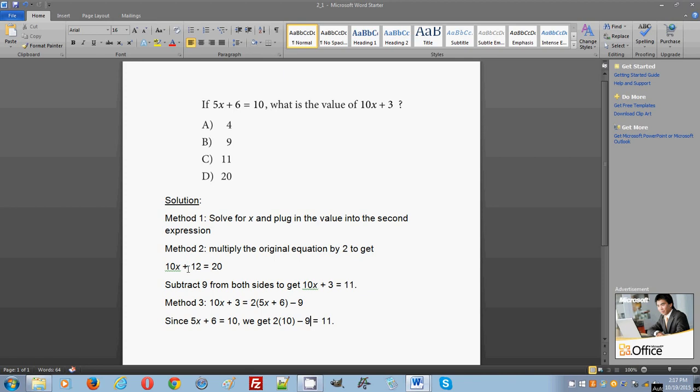So you might as well use my method because it's really easy to see. 10x plus 12 resembles 10x plus 3, and the only difference is there's a 3 here and a 12 here. So you know that to get 3 you need to subtract 9, and that's it, you get 11. Choose the one that you really like.